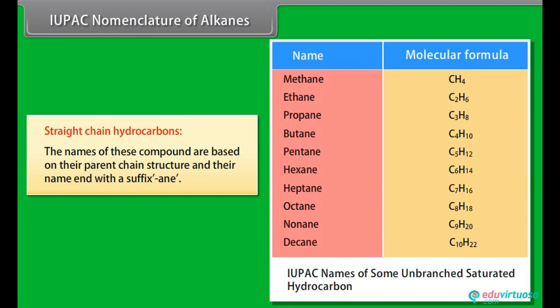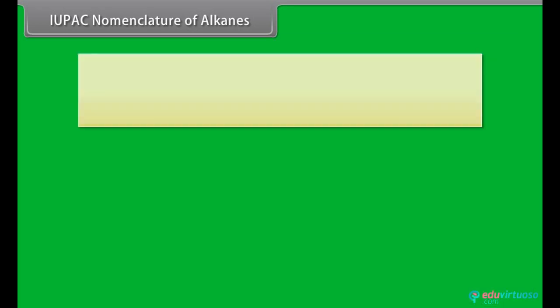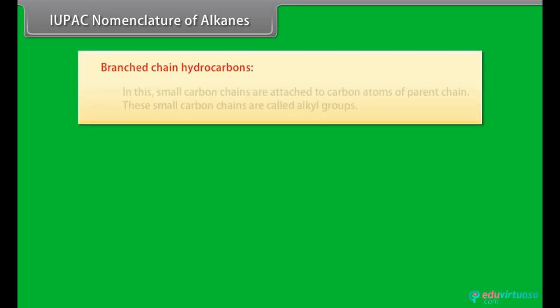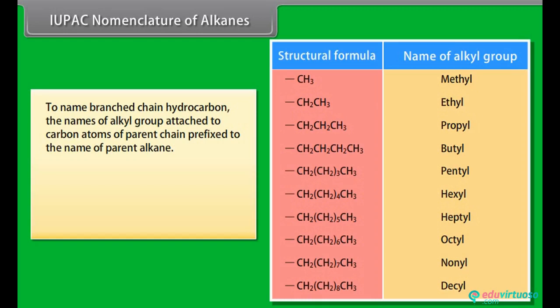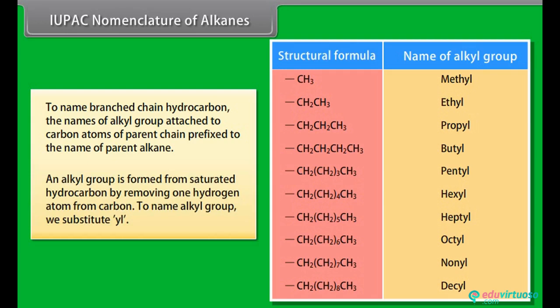IUPAC nomenclature of alkanes. Straight-chain hydrocarbons: the names of these compounds are based on their parent chain structure and their name ends with the suffix -ane. Branched-chain hydrocarbons: in these, small carbon chains are attached to carbon atoms of the parent chain. These small carbon chains are called alkyl groups. To name a branched-chain hydrocarbon, the names of the alkyl groups attached to carbon atoms of the parent chain are prefixed to the name of the parent alkane.